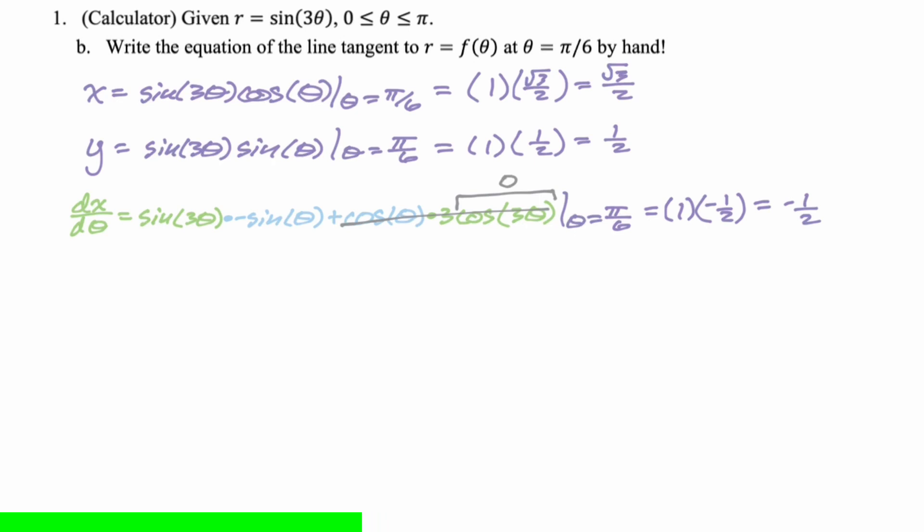dy d theta. Again, the product rule. So dy d theta, we're going to have first, which is sine of 3 theta. Derivative of the second is cosine theta. Plus second, which is sine of theta. Derivative of the first is 3 cosine 3 theta. The same thing is going to happen here, though, when we evaluate it at pi over 6. The second part, because the cosine of pi over 2 is 0, that drops out. So we just have to get sine of pi over 2, which is 1, and cosine of pi over 6, which is root 3 over 2. So we get root 3 over 2 as our answer for dy d theta.